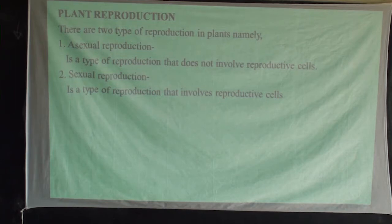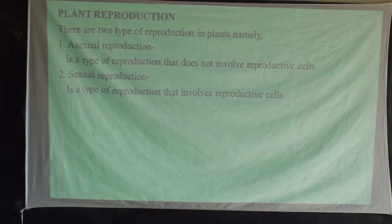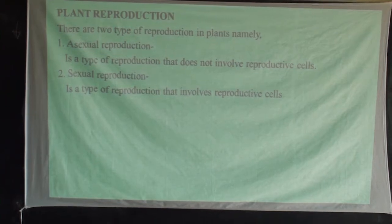Plants have two types of reproduction, which is asexual and sexual reproduction. For asexual reproduction, it's a type of reproduction that does not involve reproductive cells — the gametes. The male and female gametes are not involved in this kind of reproduction. That's why we can also refer to asexual reproduction as vegetative reproduction.